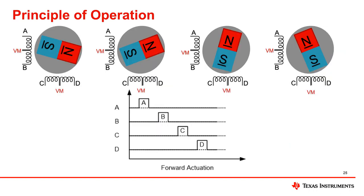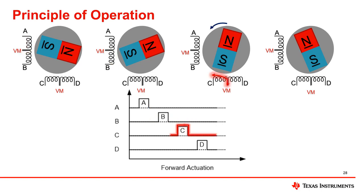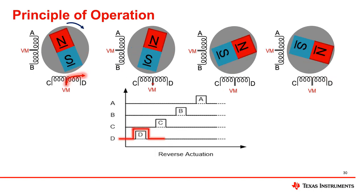Here is another way of looking at this. The waveform shows where we send current through A, followed by B, C, and D to drive the motor. Again, unipolar stepper motors do not need any reverse current to reverse the direction. Instead, just energize the low side FETs in reverse order.